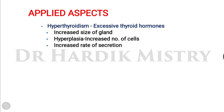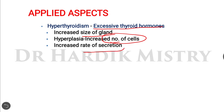Starting with hyperthyroidism: in this condition there will be excess thyroid hormones, an increase in the size of the thyroid gland, hyperplasia (that means increase in the number of cells of the thyroid gland), as well as an increase in the rate of secretion.